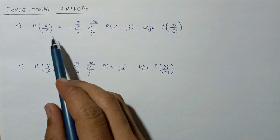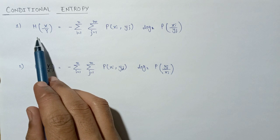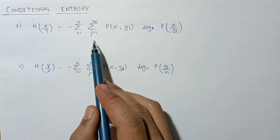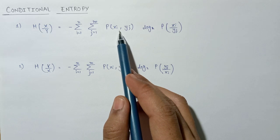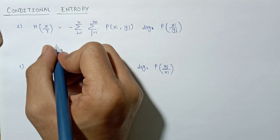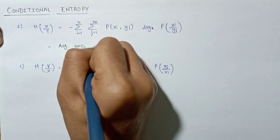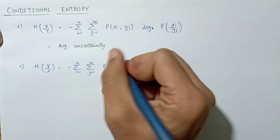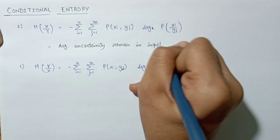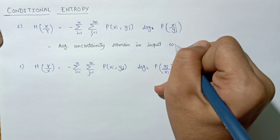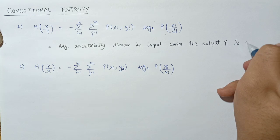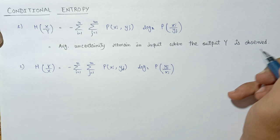Now let us look at the third type: conditional entropy. The formula for conditional entropy H(X|Y) is: minus of summation i from 1 to N, summation j from 1 to M, of P(Xi, Yj) × log base 2 of P(Xi|Yj). It shows the average uncertainty remaining in input when the output Y is observed.